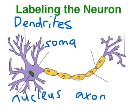We've got the Schwann cells here. We've got the node of Ranvier here, and we've got the axon terminals.